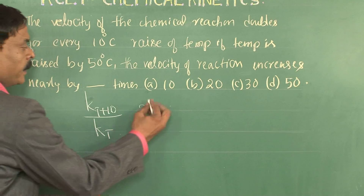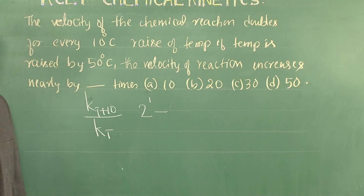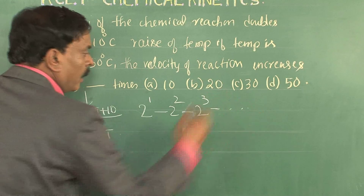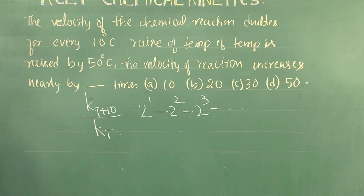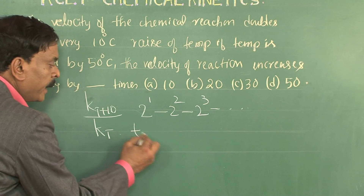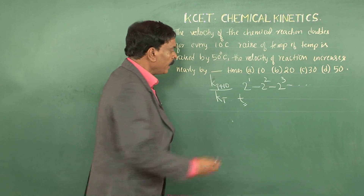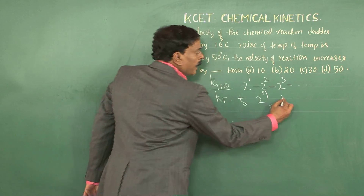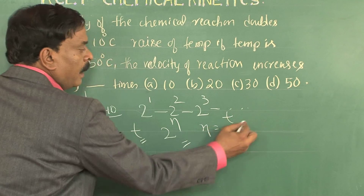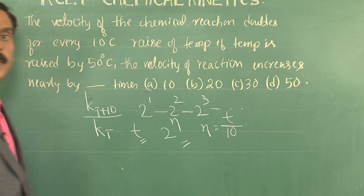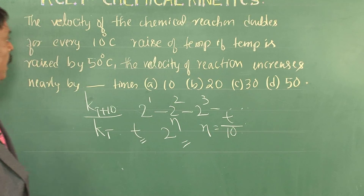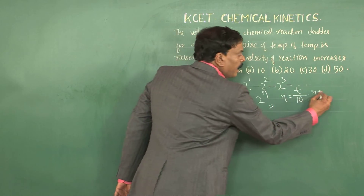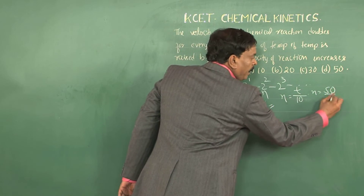For a 10°C raise it is 2¹, for 20°C it is 2², for 30°C it is 2³, and so on. In general, for a raise of temperature, the rate increases by 2ⁿ times, where n = temperature rise divided by 10. In this question, the temperature rise is 50°C, so n = 50 / 10 = 5.